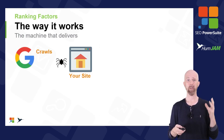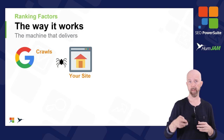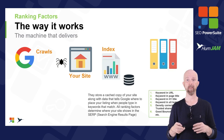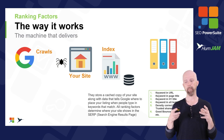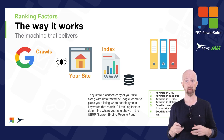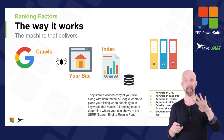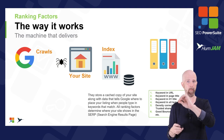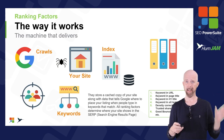Here's how it works: Google crawls your site with a piece of code called a spider or robot. Once they crawl your site, they index it based on over 200 ranking factors built on four categories.